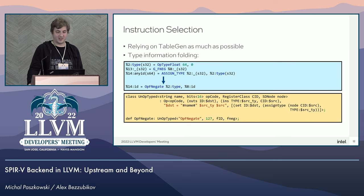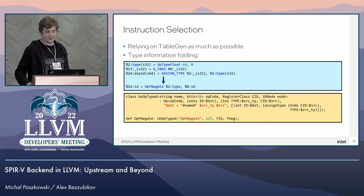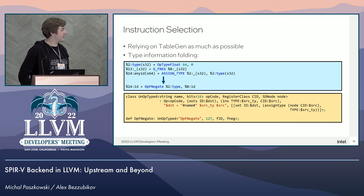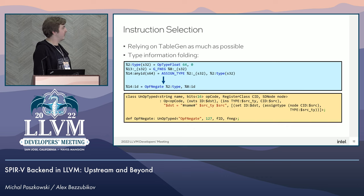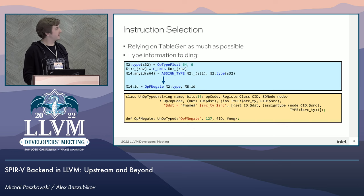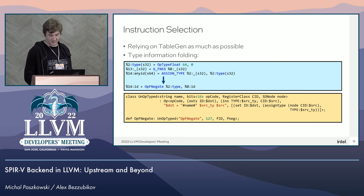Let's talk a bit more about instruction selection. We're trying to use TableGen patterns as much as possible, but we didn't manage to cover all of the instructions with them. This is a simple example of how the type information intrinsic is folded into the final instruction. The main instruction is floating point negation, and then we have this assign type information which assigns the SPIR-V result type to it. You can see this pattern is used to fold the instruction into the final single instruction, and the assign type instruction is supported in Global ISel selection patterns using this approach, which is very helpful.